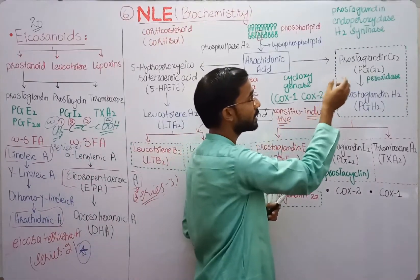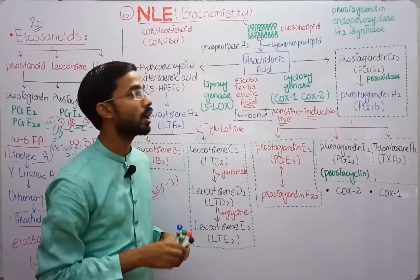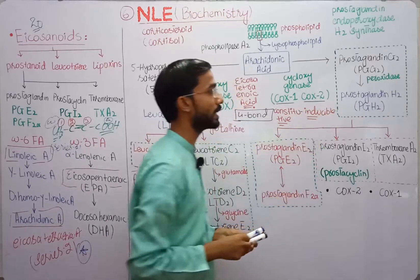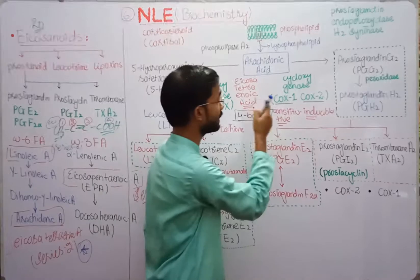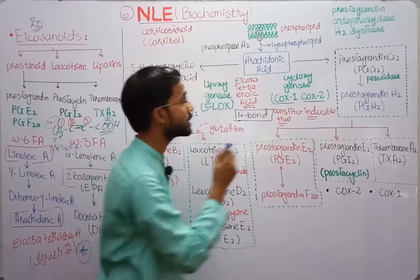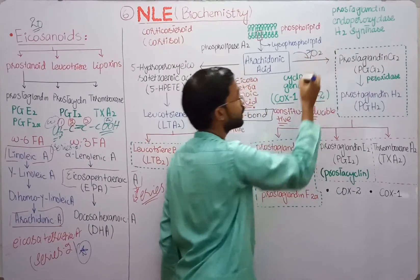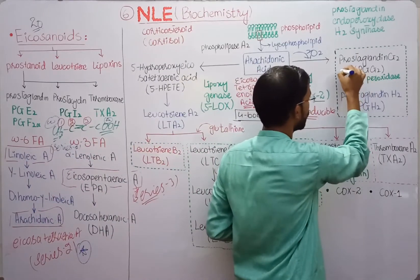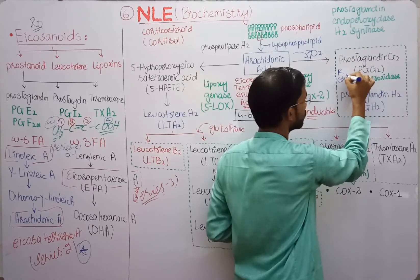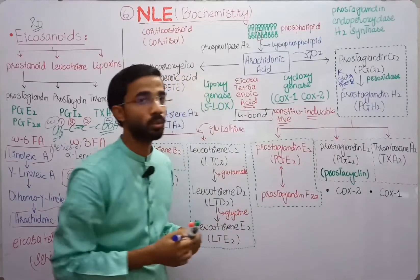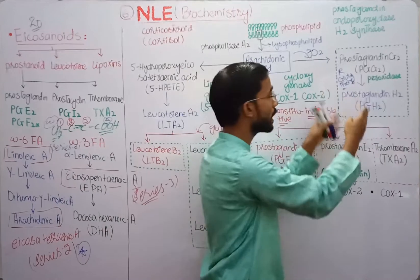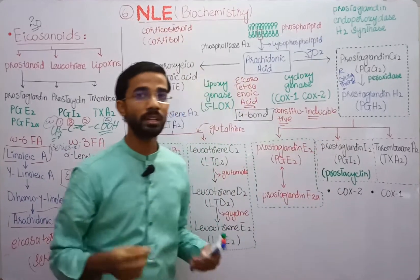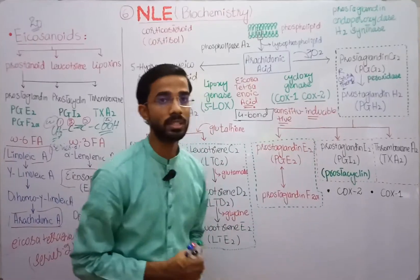Prostaglandin G2 converts into Prostaglandin H2 with the help of the enzyme peroxidase. When arachidonic acid converts into PGG2, the cyclooxygenase enzyme takes two oxygen molecules. When PGG2 converts into PGH2, it takes reduced glutathione. This whole complex is called Prostaglandin Endoperoxidase H2 Synthase, having two enzymes: cyclooxygenase and peroxidase.